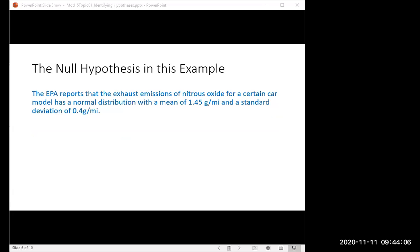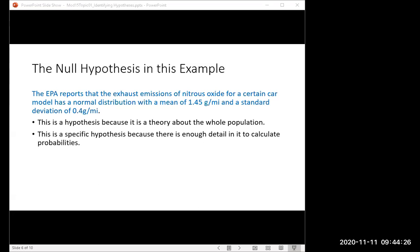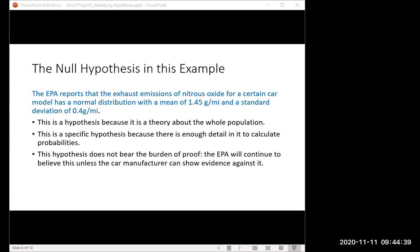So here's the null hypothesis in this example. It's the blue statement where the EPA gives their current existing belief about the distribution. And you can tell it's a hypothesis. It's not a fact because it's about the whole population. You can tell it's very specific because you've got everything you need to know to calculate probabilities. It's telling you exactly the distribution. And it does not bear the burden of proof because the EPA has already reported this and they'll just continue to believe it until you can show them evidence otherwise. So that's why this one is the null hypothesis and we use this symbol H with a little zero underneath to stand for the null hypothesis. Null is just an old-fashioned word for the number zero.